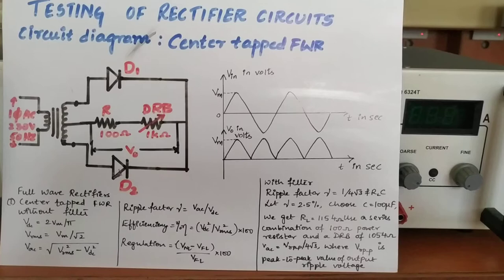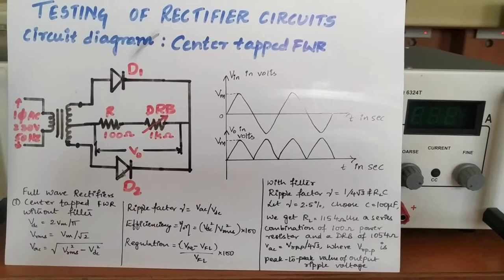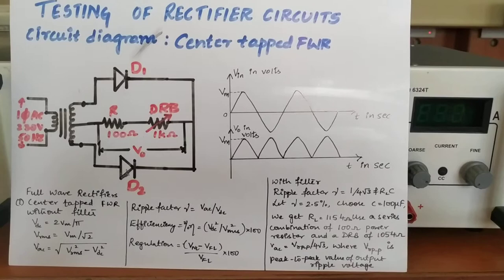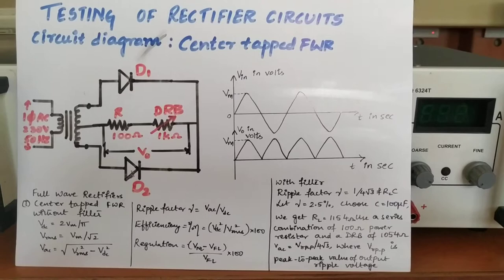Rectifier circuits are mainly classified as two types: one is half wave rectifier, and the other is called full wave rectifier. In half wave rectification, either the positive or the negative half of the AC wave will be rectified and passed to the output, and the other half of the waveform will be blocked.